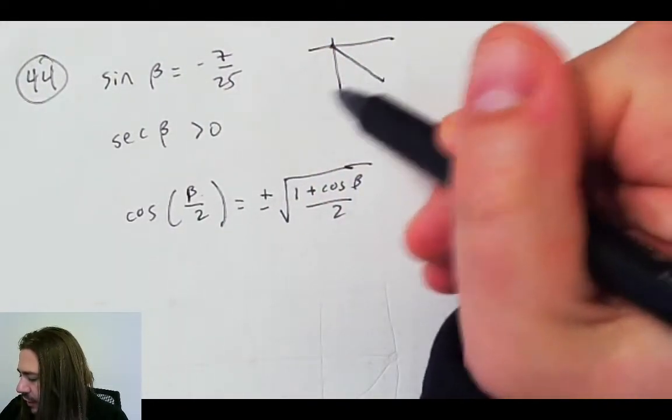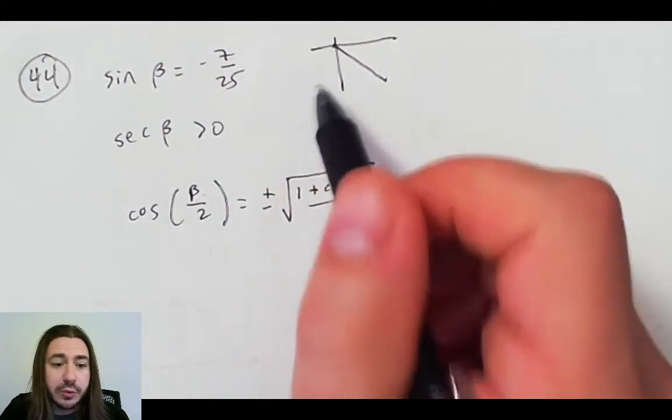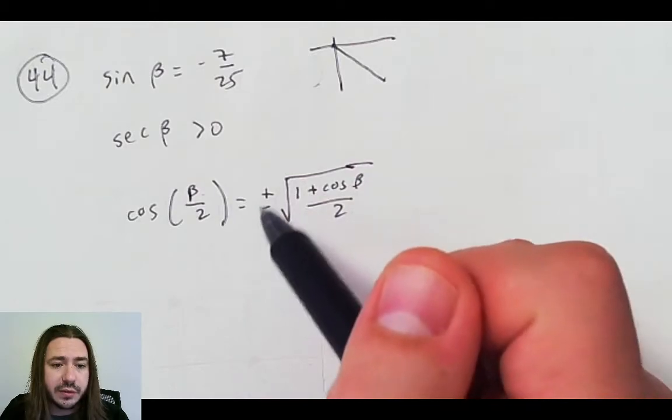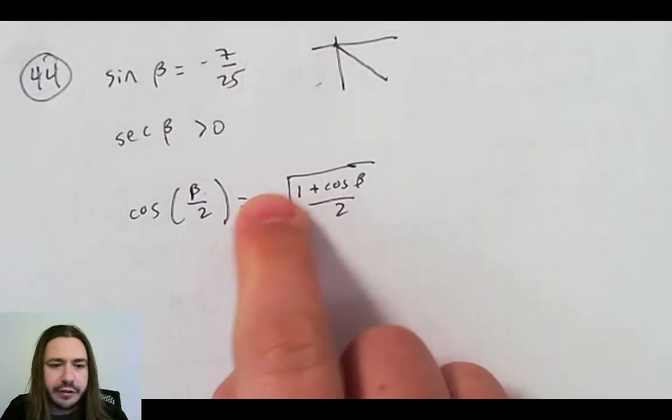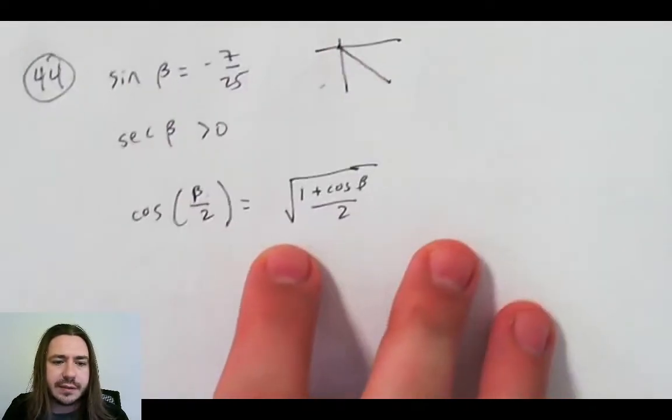Right, if sine's negative, cosine's positive. So cosine being positive, well that tells us right now, we know this is going to be positive, not negative. And quadrant 4, cosine is positive.